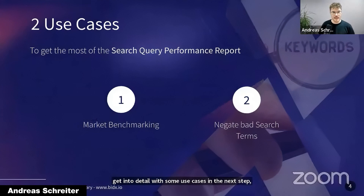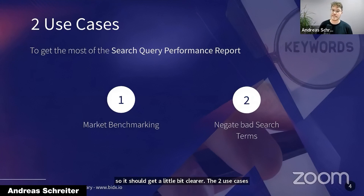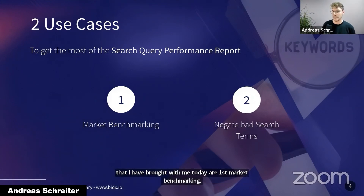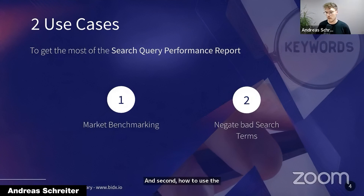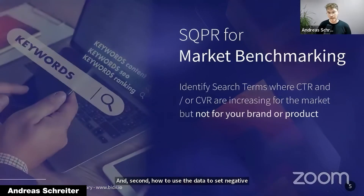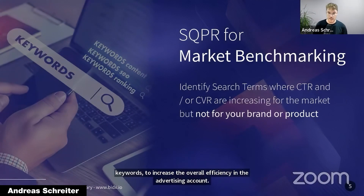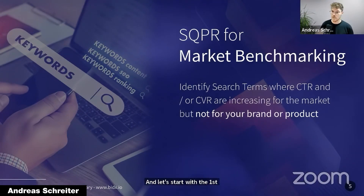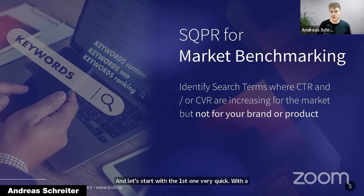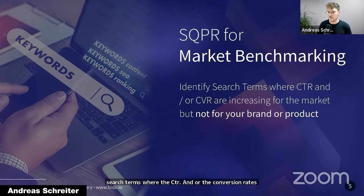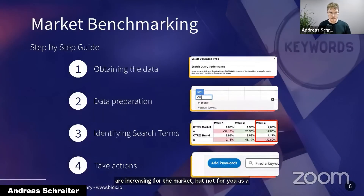The two use cases I have brought with me today are: first, market benchmarking; and second, how to use the data to set negative keywords to increase the overall efficiency in the advertising account. Let's start with the first one — market benchmarking. You can use the report to identify search terms where the CTR and/or conversion rates are increasing for the market, but not for you as a brand or for a specific product.